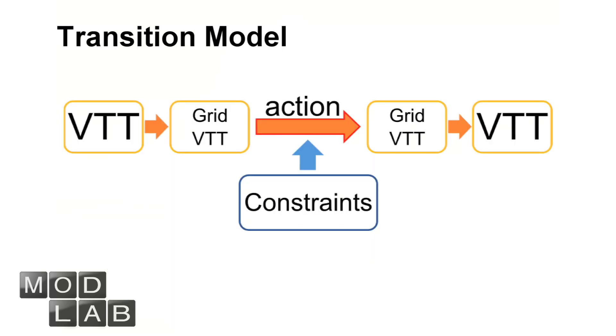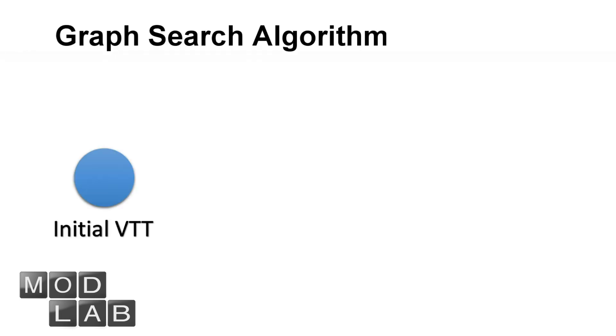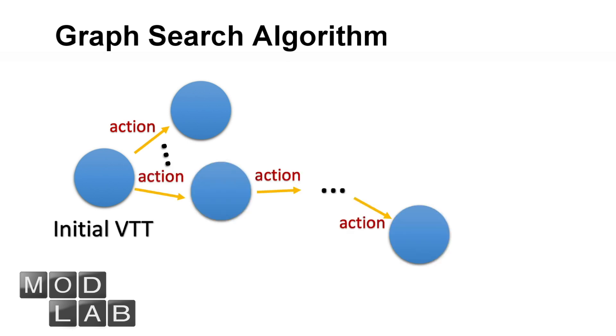With all the previous work, we can build our transition model. Given a motion task and a VTT, grid space can be generated. Then first convert this VTT into a VTT in grid space. Then apply action and check some constraints that are collision-free to generate a new VTT in grid space, and finally convert it back to a new VTT truss in Cartesian space. A graph search algorithm based on A-star framework is presented to find the optimal sequence of discrete actions given the initial VTT and the goal VTT efficiently.